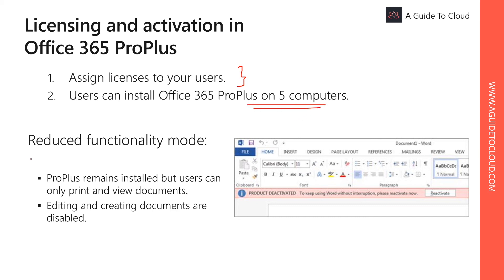The key message is you need internet connectivity to activate the license, and a user can install on up to 5 computers. You also need to understand reduced functionality mode. In reduced functionality mode, Office 365 Pro Plus remains installed on the computer but users can only view and print their documents — all features for editing or creating new documents are disabled.